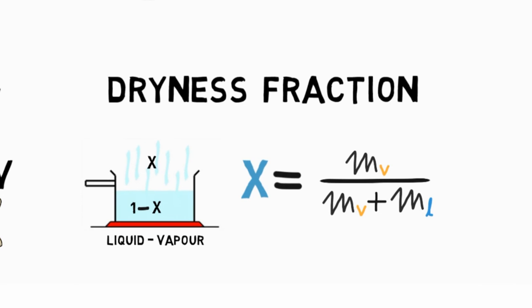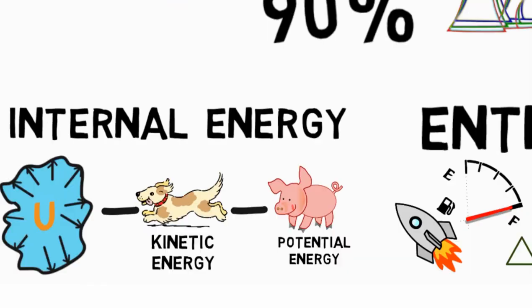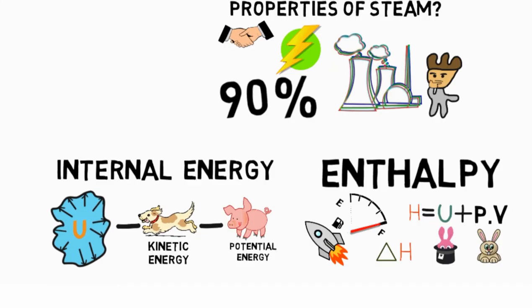Hence, we learned about what dryness fraction of steam is, then moved on to learn about what enthalpy is, and finally saw what internal energy is.